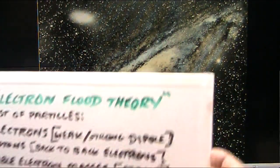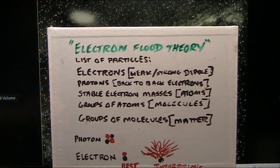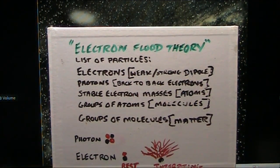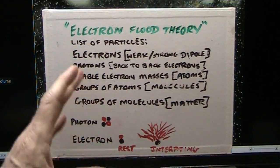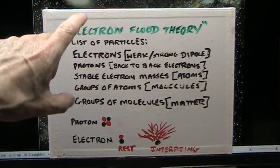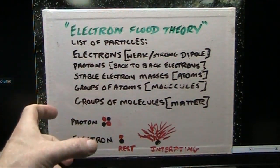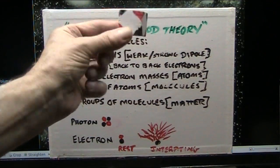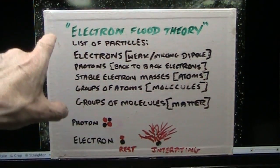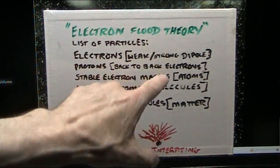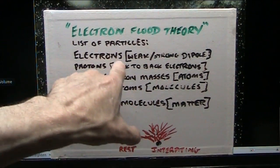OK, my friends, you know that electron flood theory says that the entire universe is completely flooded with particles we would call electrons or photons. Now, photons are made of electrons. They're made of a box of electrons, basically four of them, I believe.